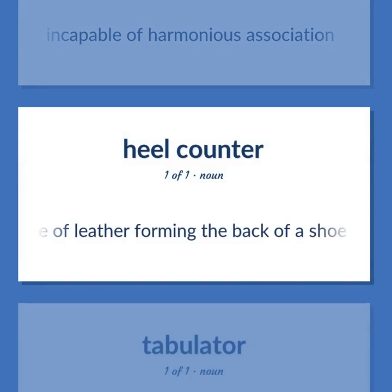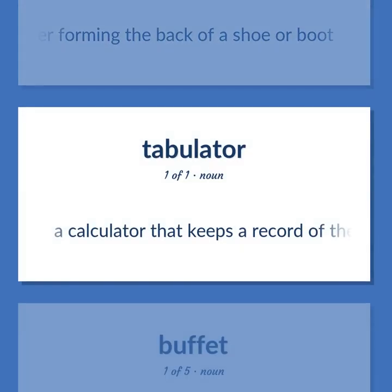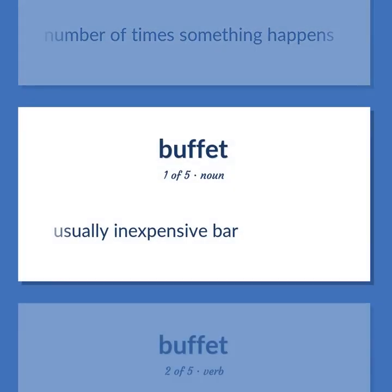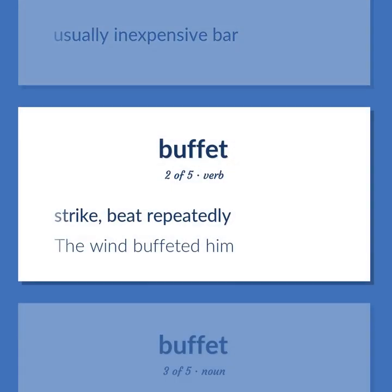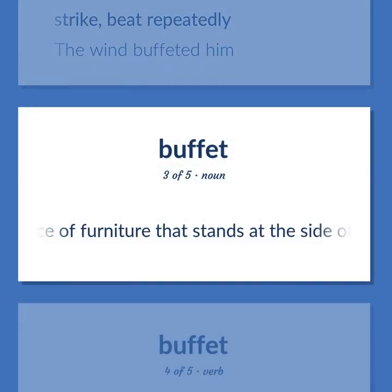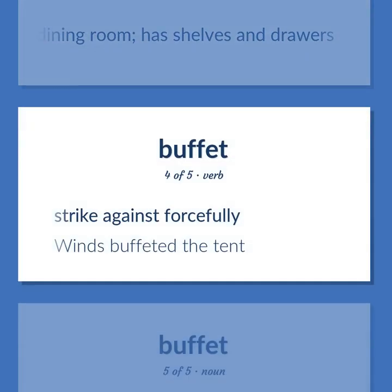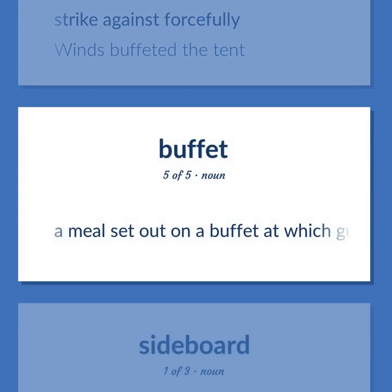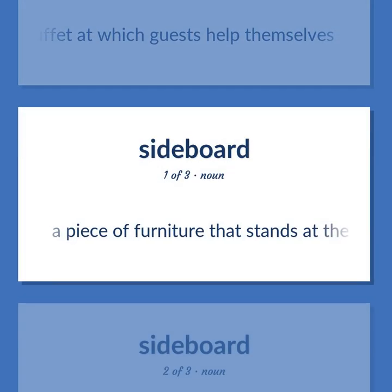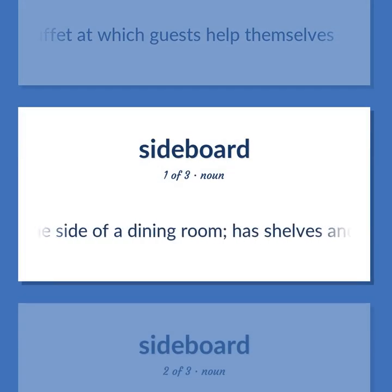A piece of leather forming the back of a shoe or boot. A calculator that keeps a record of the number of times something happens. Usually inexpensive bar. Buffet: strike, beat repeatedly — the wind buffeted him. A piece of furniture that stands at the side of a dining room; has shelves and drawers. Strike against forcefully — winds buffeted the tent. A meal set out on a buffet at which guests help themselves.